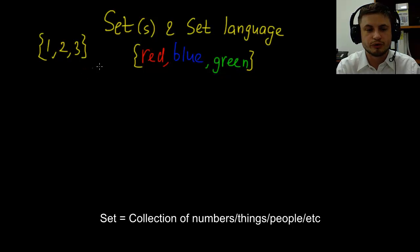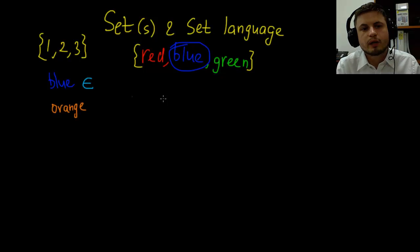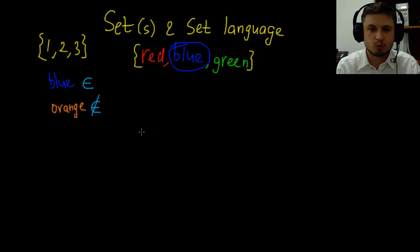When it comes to sets, you need to know certain symbols. One of them looks like a little hand, and this will help you remember it because what this means is that something belongs to the set. For example, if I say blue, blue belongs to the set red, blue, and green because blue is actually inside of the set. However, orange is not part of the set. So we use this crossed-out hand symbol. Think of the hand not being able to hold the color orange because it's not part of the set.